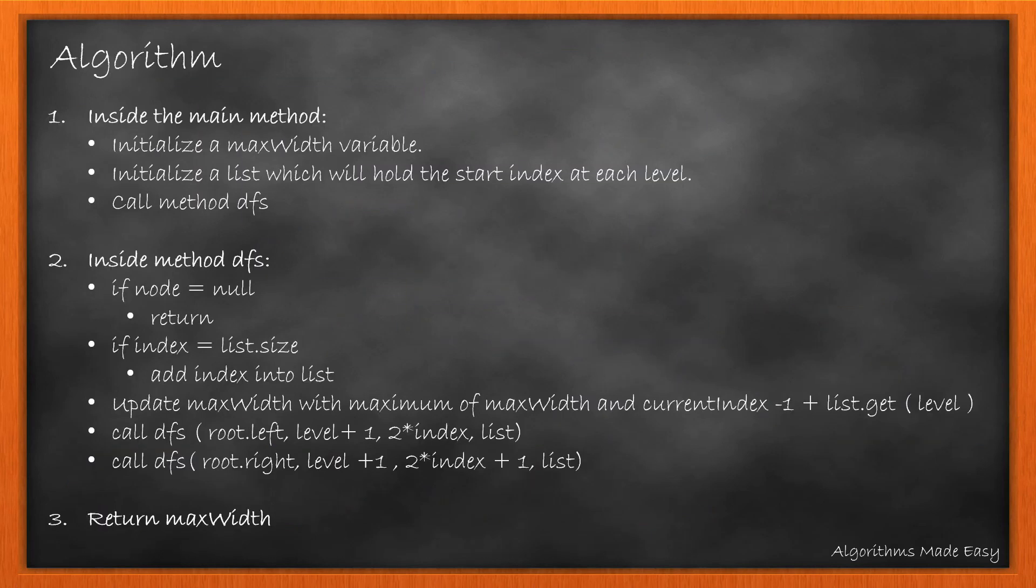Summing it up, here's the algorithm. We initialize a variable max width to hold the result. We also initialize a start list and then we call the DFS method. In the DFS method, we check if the node is null. If yes, we return. If the index is equal to the size of the list, we add the current index in the list. We update the max width and then we call DFS on left and right of the root with the updated level and the index. At the end, we return the max width.